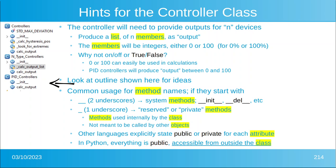Regarding common usage for method names: if they start with two underscores, that's normally reserved for system things like __init__ and __del__. If a method starts with only one underscore, it's usually a reserved or private method — used internally by the class and not meant to be called by other objects. Other languages explicitly state public or private for every attribute, which gets tedious. In Python everything is public, but the single underscore convention reminds us what's intended to be private.